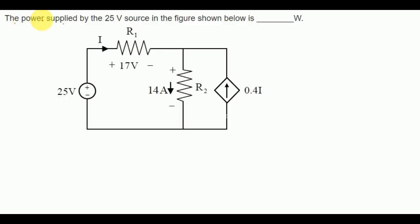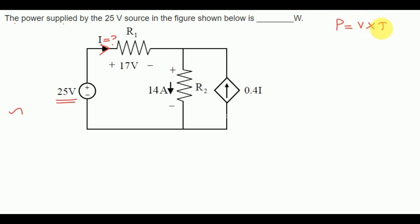Now let us solve the second problem. The power supplied by the 25 volt source in the figure shown below is to be found. This is the circuit diagram given. We want to calculate the power supplied by this 25 volt source. We know the voltage value, and there is a current supplied by this battery. If we know the value of current, we can easily calculate the power using the formula P = V × I.